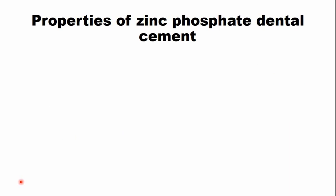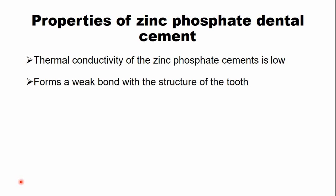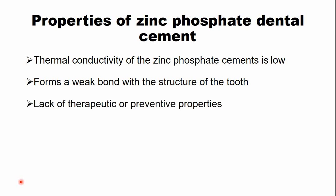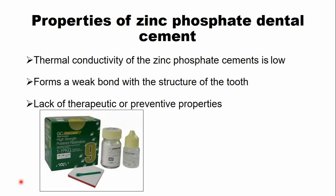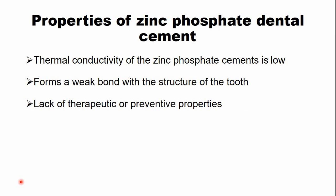The properties of the zinc phosphate dental cement: first, the thermal conductivity is low. This is the reason the cement is used below metallic restorations, as it protects the dental pulp. The zinc phosphate cement forms a weak bond with tooth structure because it forms only a mechanical bond and does not form a chemical bond. Additionally, this cement does not release any therapeutic or preventive agent, unlike glass ionomer cement which releases fluoride, or zinc oxide eugenol cement which releases eugenol.